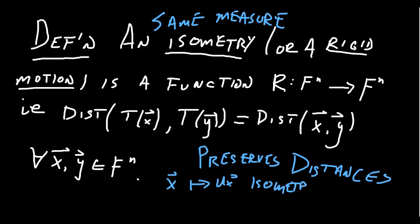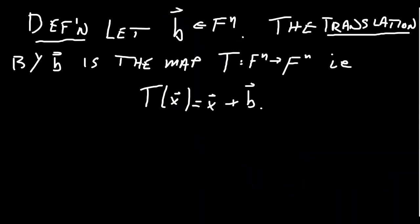What else can preserve distances? Isometries are transformations of the plane or your vector space that don't distort anything — they don't distort the shape, the angles, or the distances. All of that is preserved. So orthogonal matrices preserve distances. What else does?